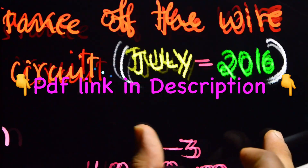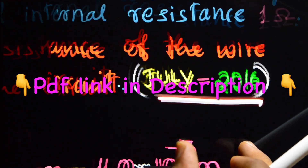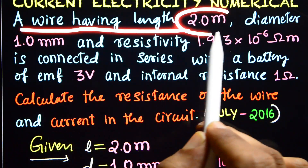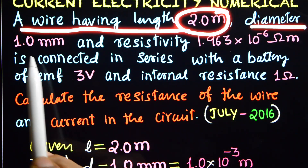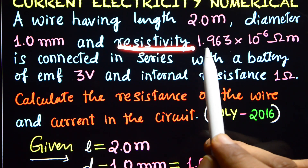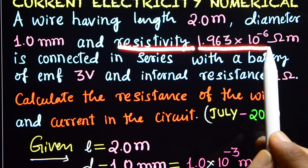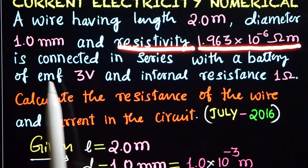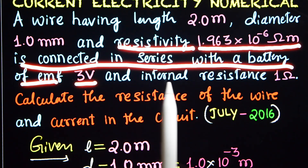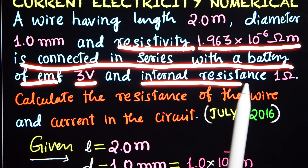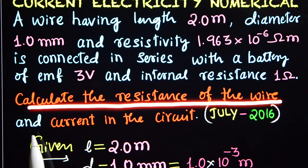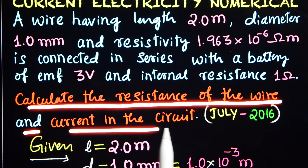Current Electricity Numerical, July 2016. A wire having length 2.0 m, diameter 1 mm, and resistivity 1.963 x 10⁻⁶ ohm meter is connected in series with a battery of EMF 3 volt and internal resistance 1 ohm. Calculate the resistance of the wire and the current in the circuit.